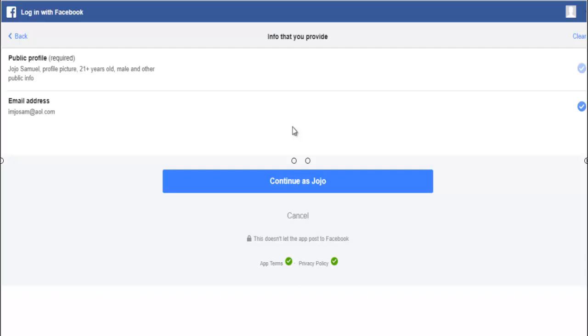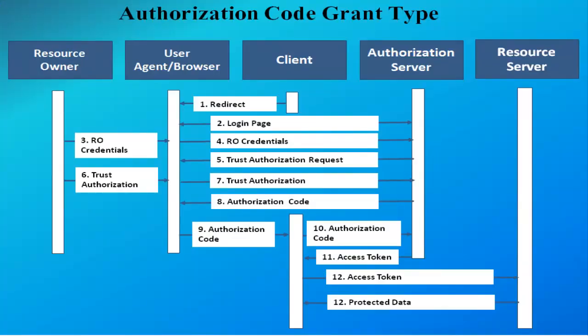After the authentication and scope is defined, the authorization server sends an authorization code to the client in the callback response. The client uses the authorization code along with its client credentials received during client registration, towards requesting an access token from the authorization server, i.e. from the Facebook server. The authorization server then returns an access token to the client, in our case to the Domino's application, along with an optional refresh token. The access token can now be used to gain the resource owner's protected resources — in our case Jojo's protected data — from the resource server.